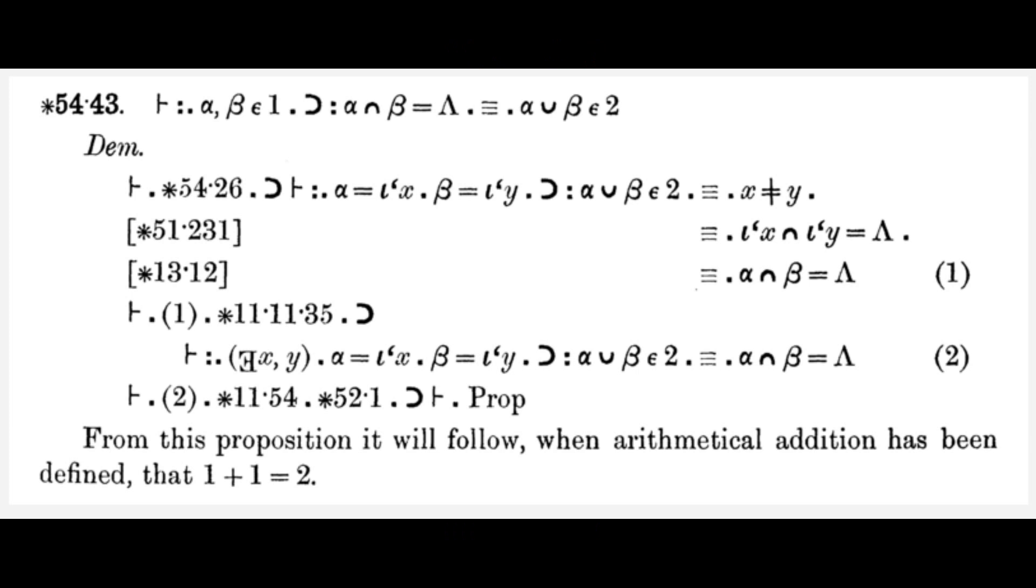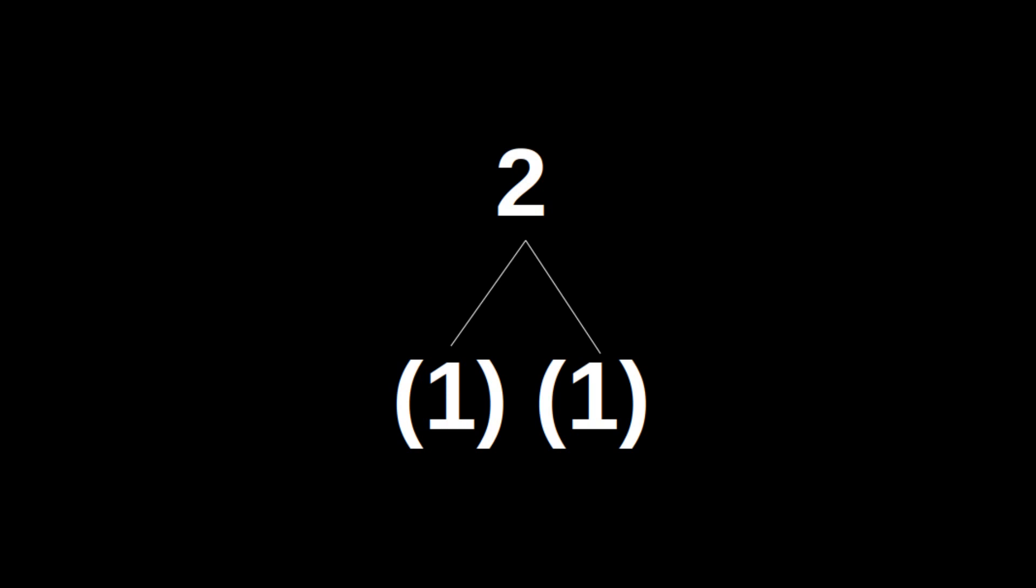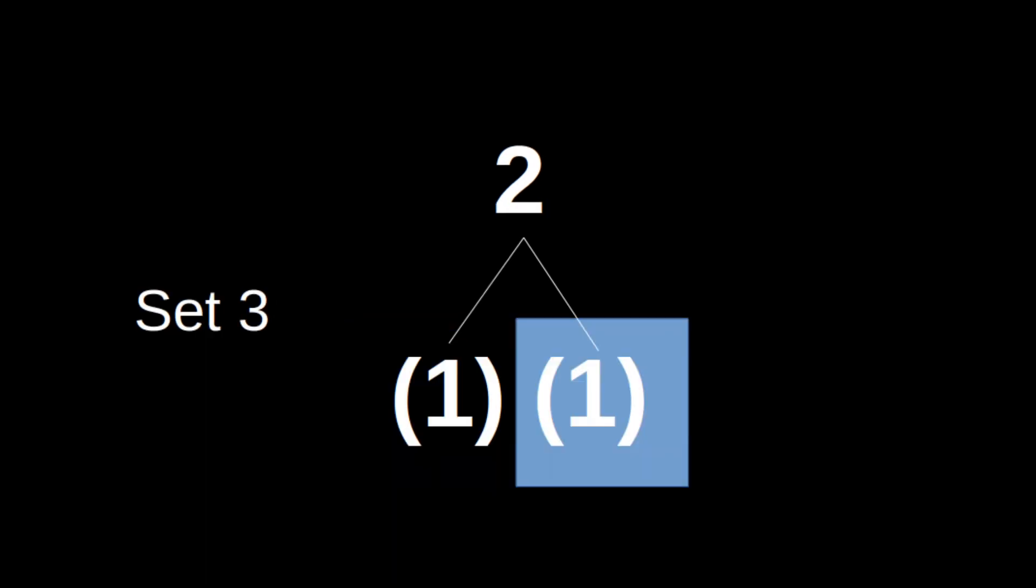They then assert that this supports the proposition, that approximates that although the same, both one and one are different, which creates three sets for the number two.